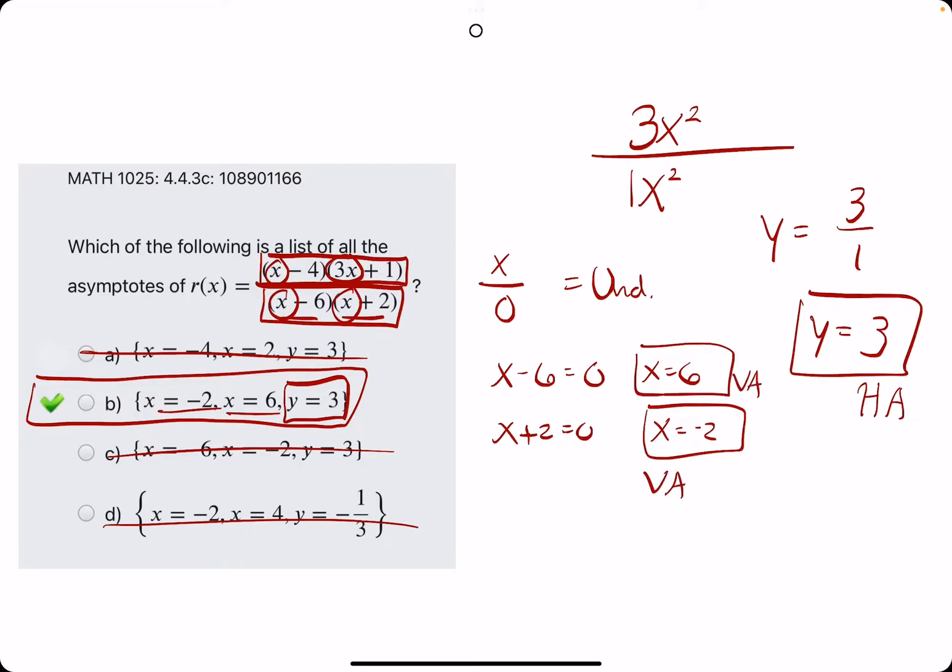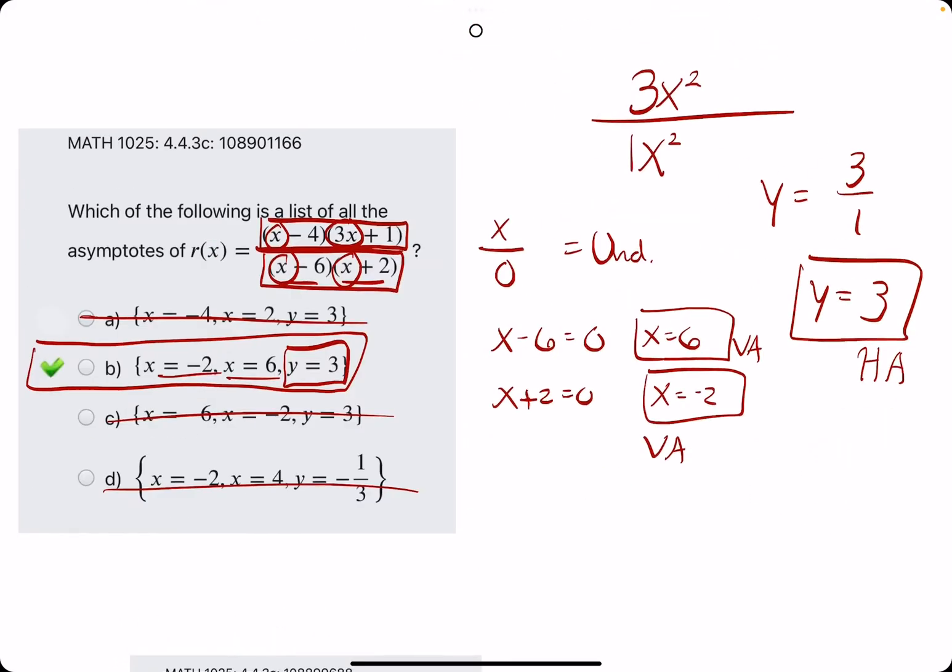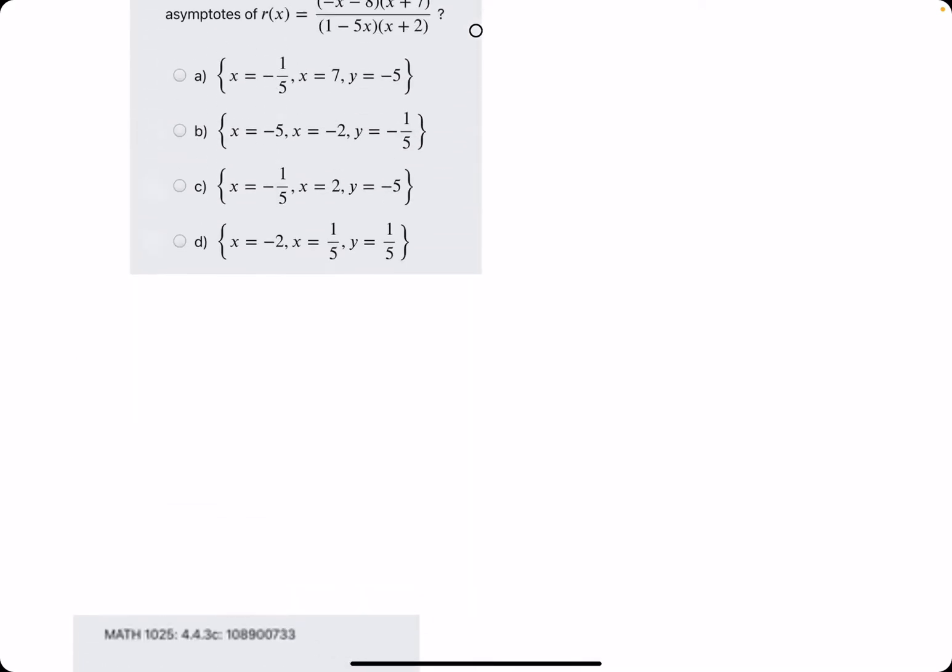And that's pretty much it. So these were the verticals, this was the horizontal, and we have our answer. All right, let's go and do at least one more. Two more maybe. All right.